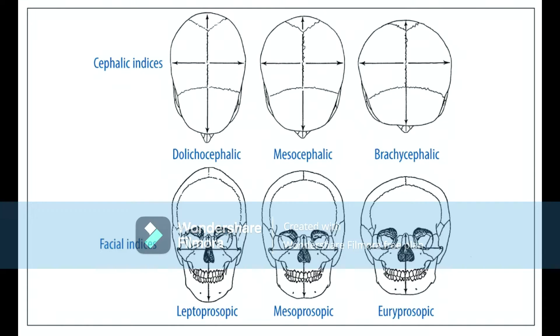Cephalic indices range from dolicocephalic — long and narrow skulls — to brachycephalic — short and wide skulls. Mesocephaly is in the middle. We have something called the cephalic index: mesocephaly covers middle skulls from 75 to 80, measured using length and width. Below 75 is dolicocephaly — long skulls — and above 80 is brachycephaly — short skulls.